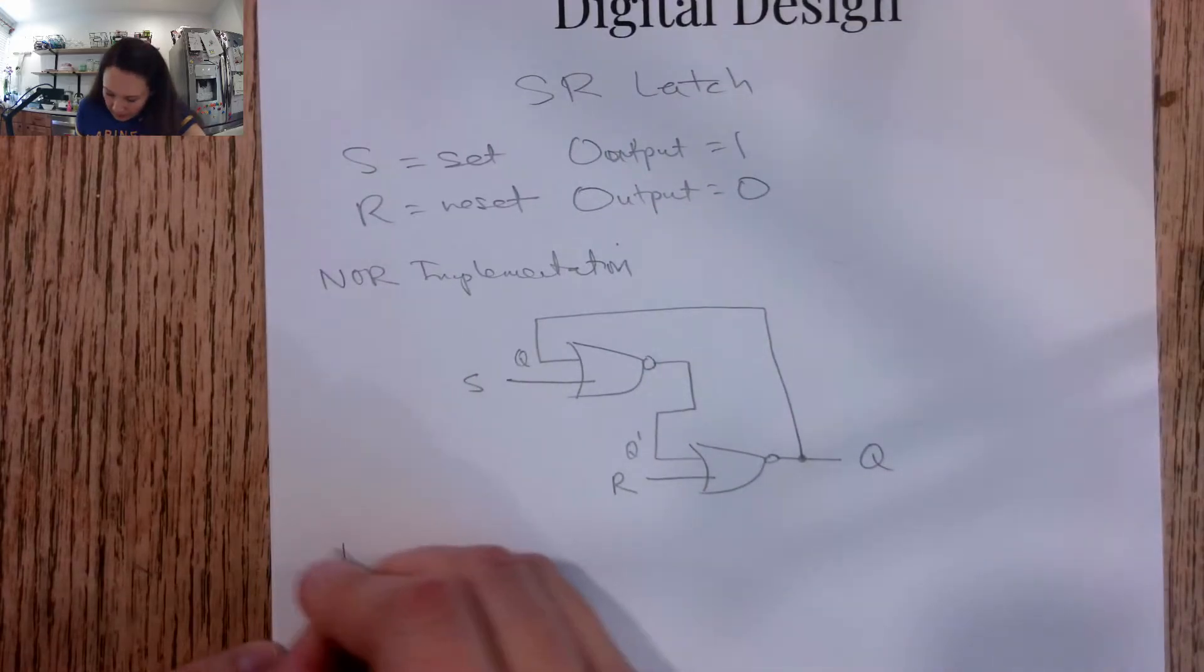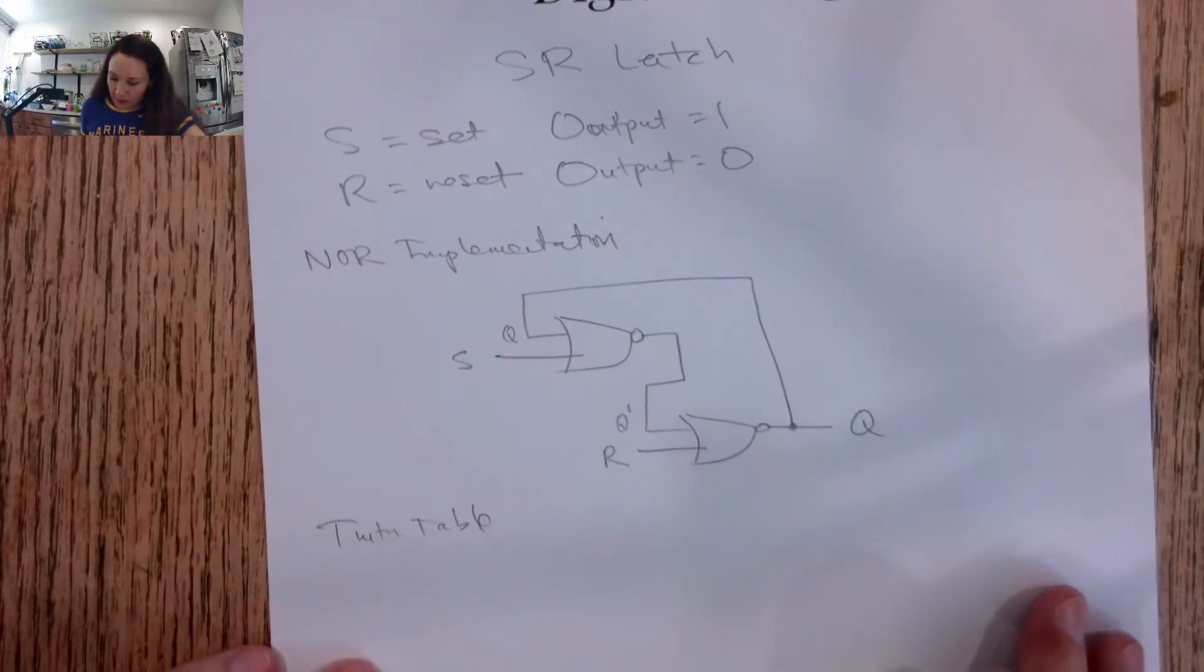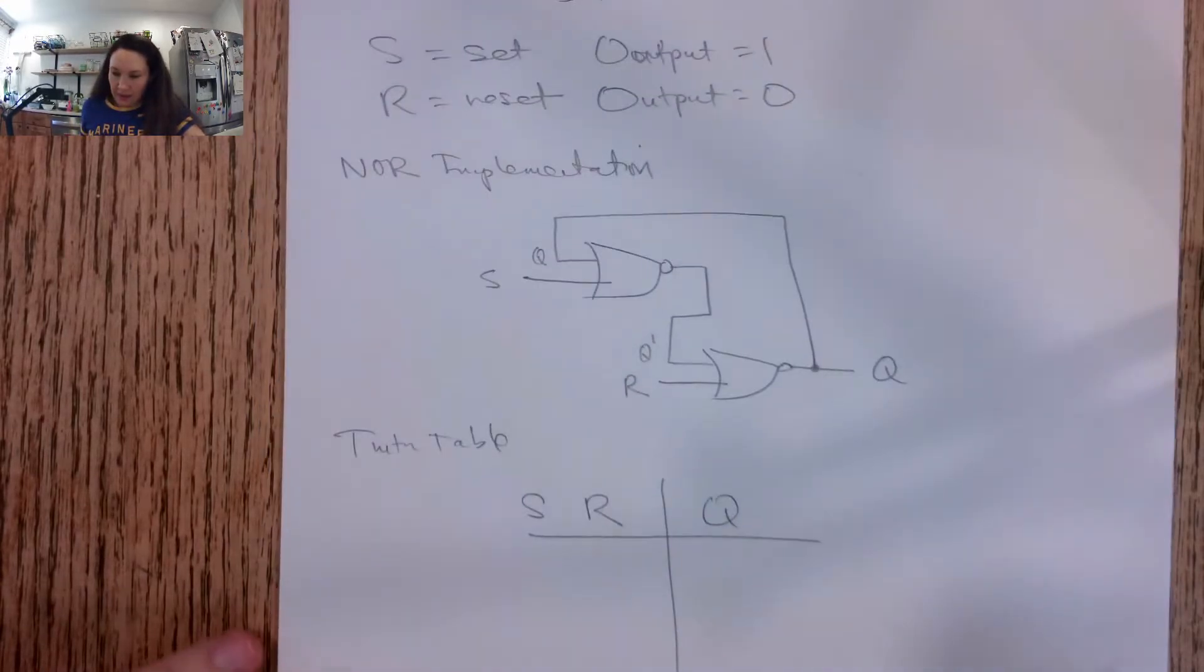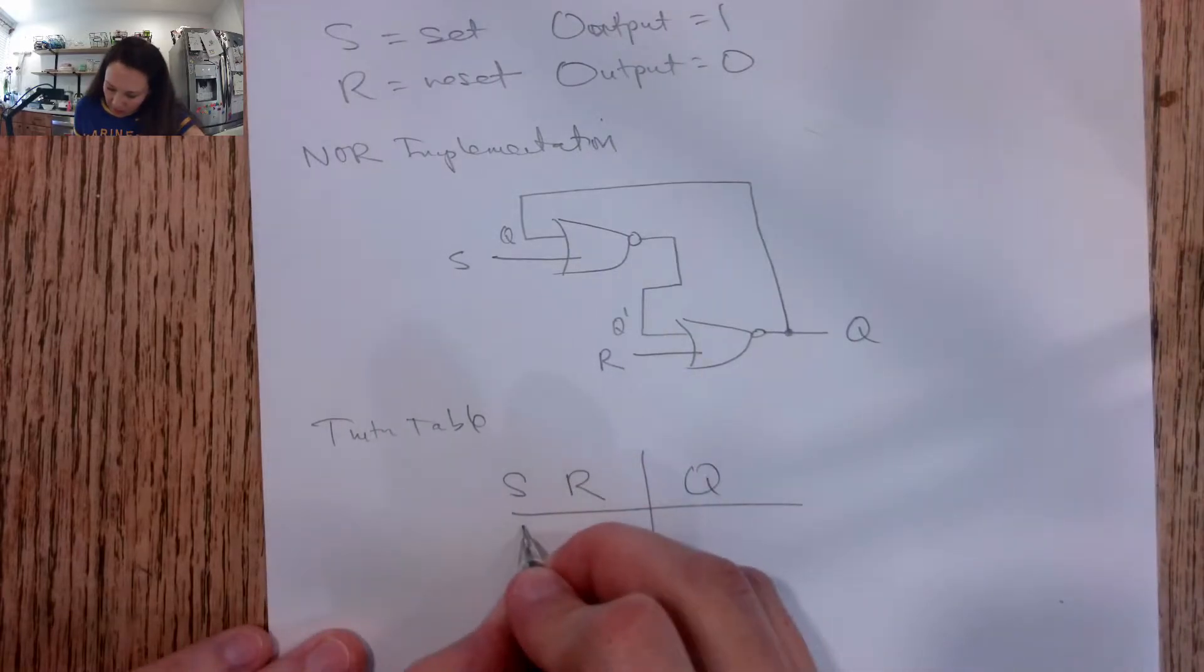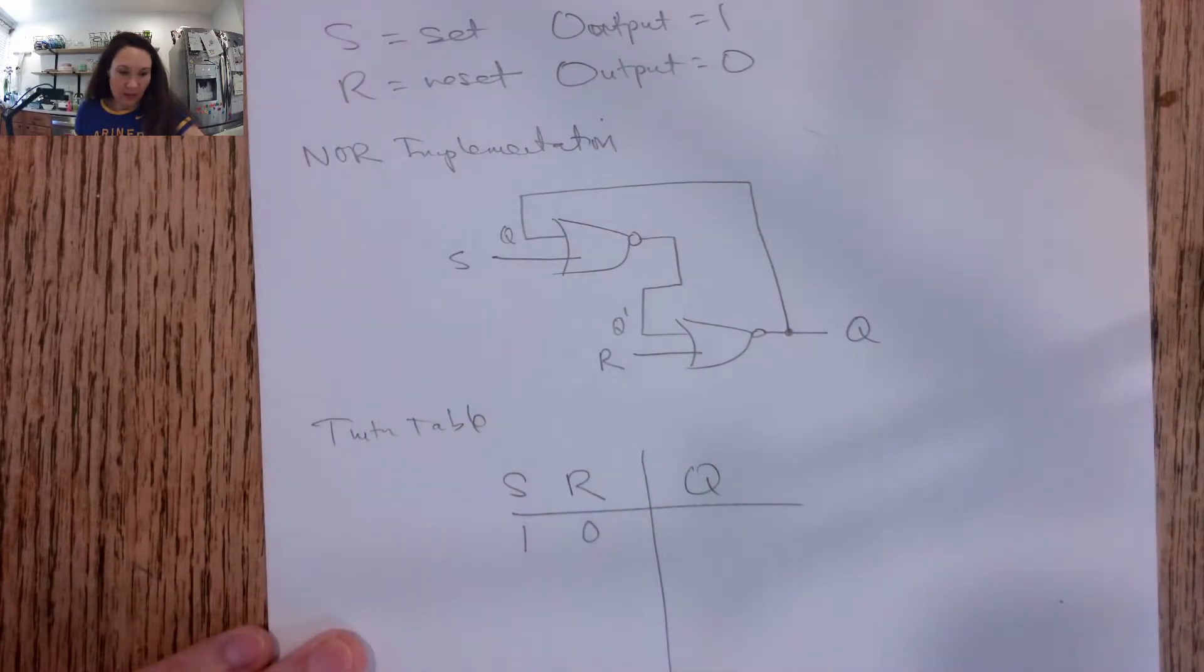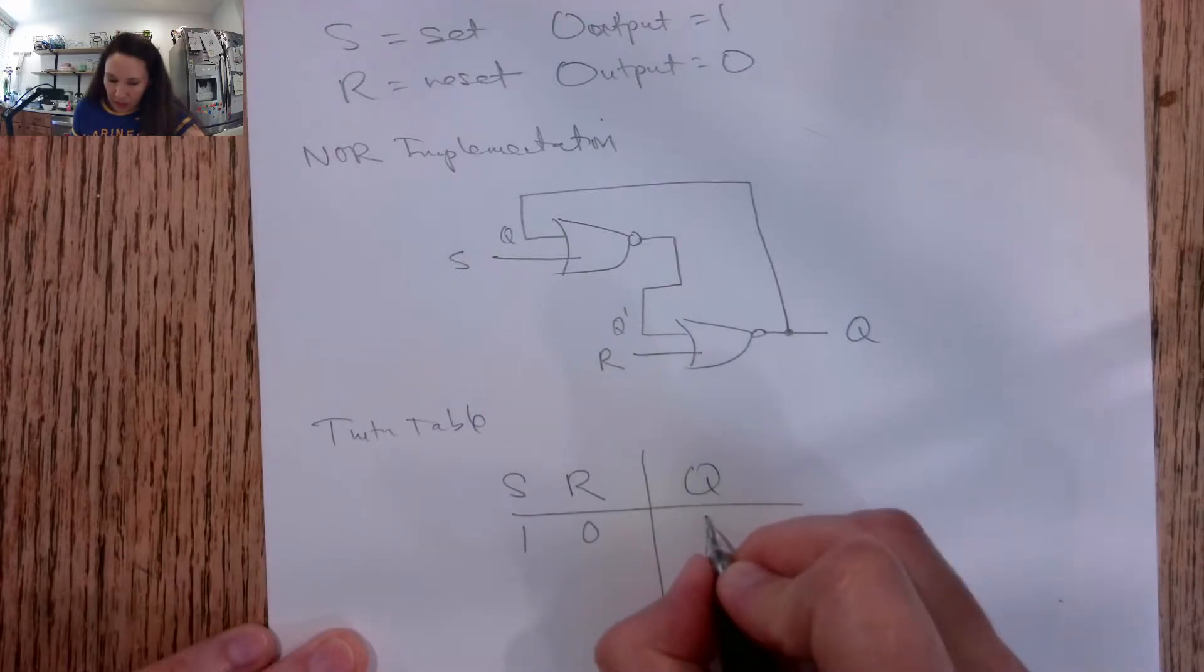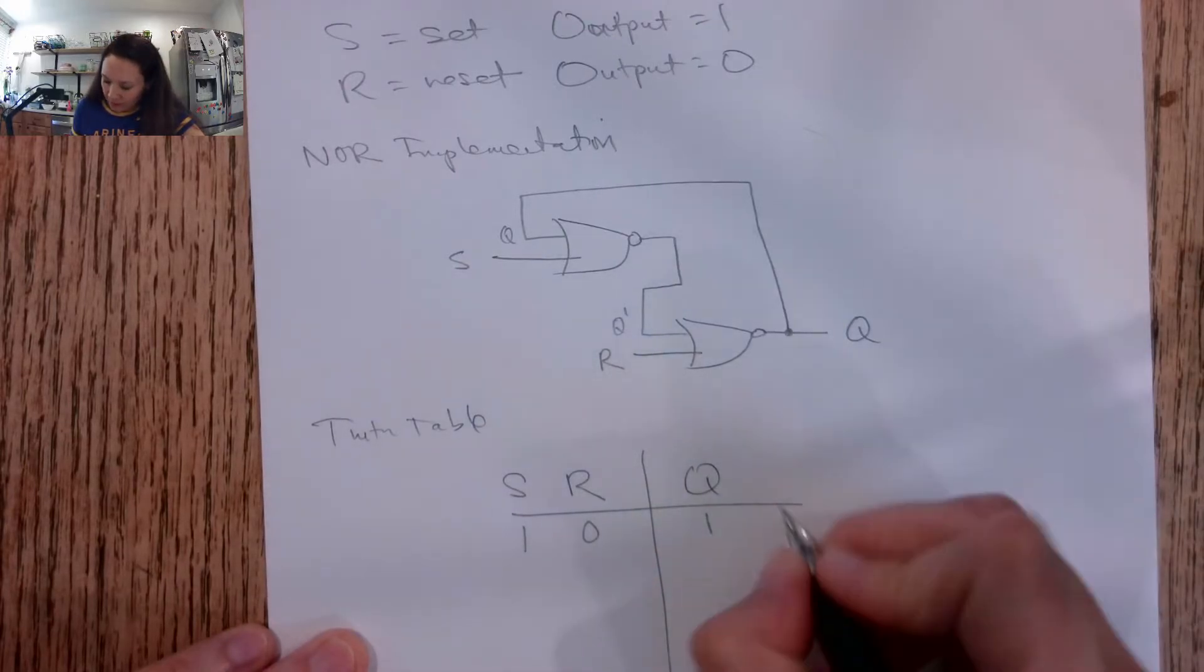The truth table for this looks like this. We have our inputs S and R and our output Q. And if our set is high and our reset is low, that means we're going to set our output Q to be 1.